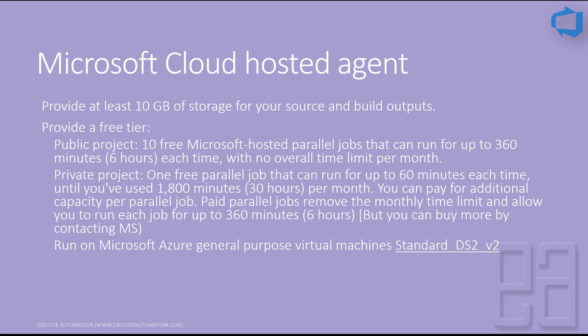For public projects, Azure gives you 10 free Microsoft hosted parallel jobs that can each run for up to 360 minutes (6 hours) with no overall monthly time limit. For private projects, you get just one free parallel job that can run up to 60 minutes each time, up to a total of 1,800 minutes (30 hours) per month.